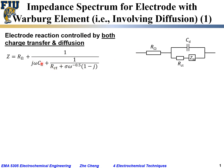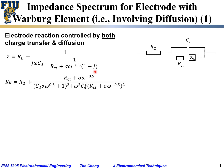We write 1 over the parallel combination: for the capacitor, 1 over jωC; for the charge transfer branch, 1 over R_CT plus the constant phase element. The constant phase element, written in real and imaginary terms, is σω^(−0.5) times (1 − j).